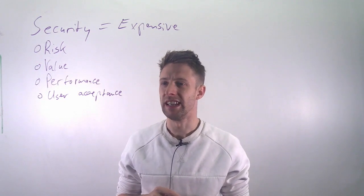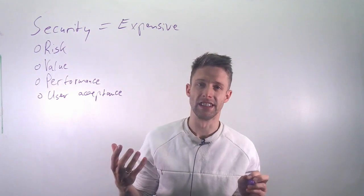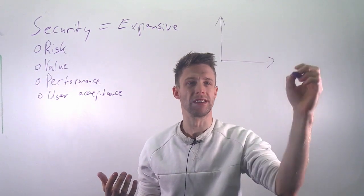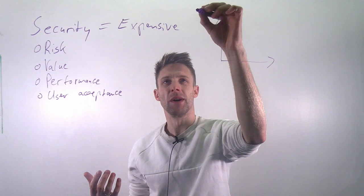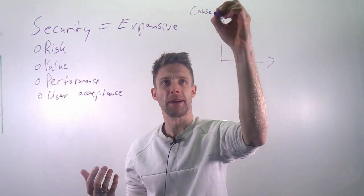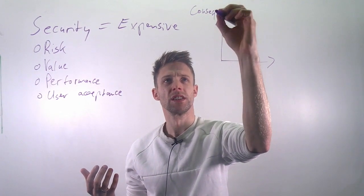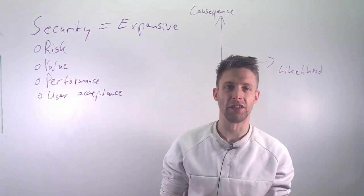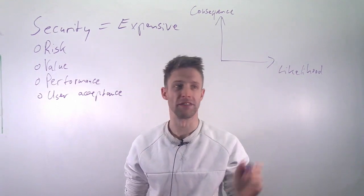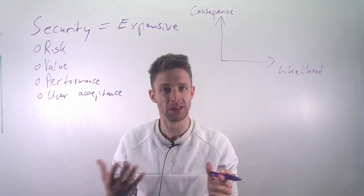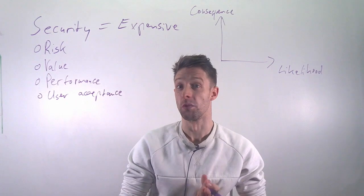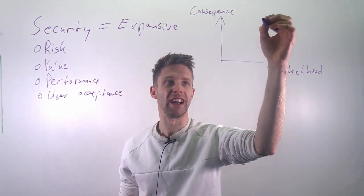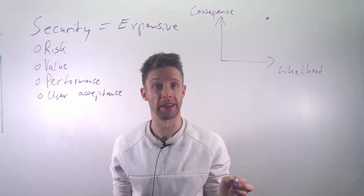What usually happens is that you do a trade-off analysis between what is the risk and what is the likelihood — essentially, what is the consequence if something happens, and what's the likelihood that it happens. This is something you very often see in other areas too; for example, meteorological organizations often use this to decide whether they should issue a weather warning.